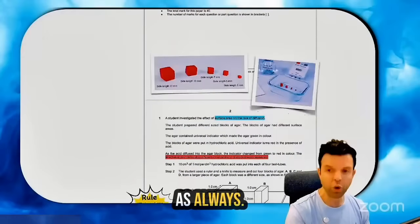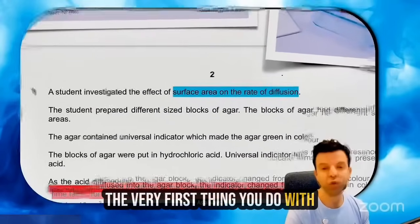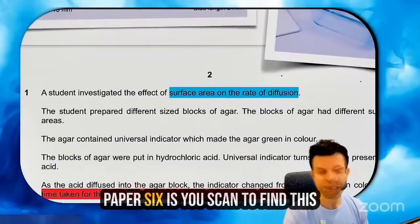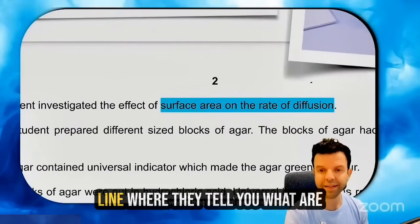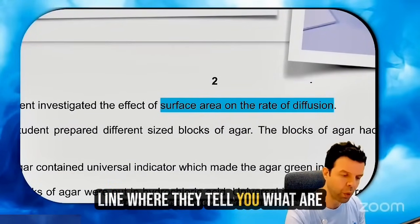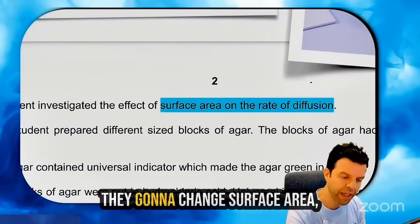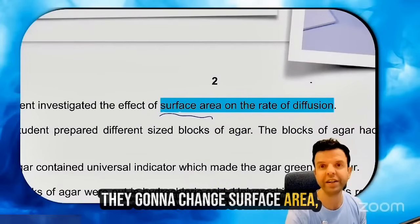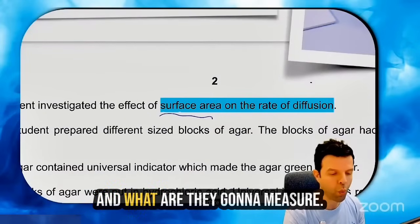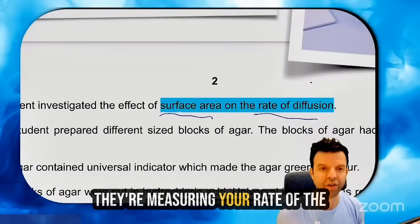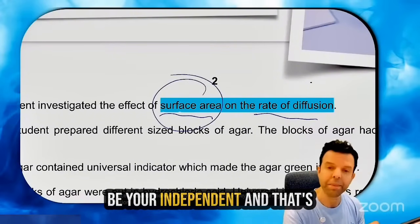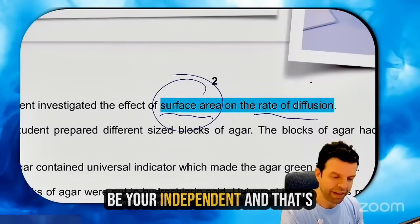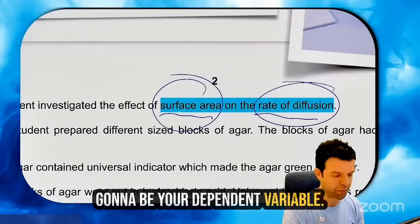The very first thing you do with Paper 6 is you scan to find the line where they tell you where they are going to change surface area and where they are going to measure. They're measuring here rate of diffusion, because that's going to be your independent and that's going to be your dependent variable.